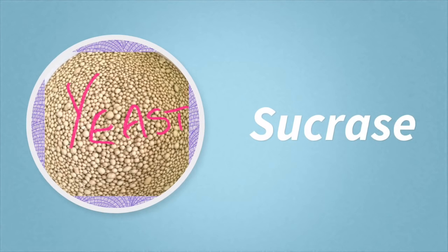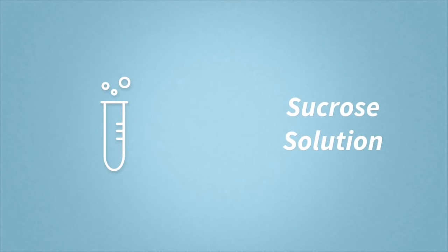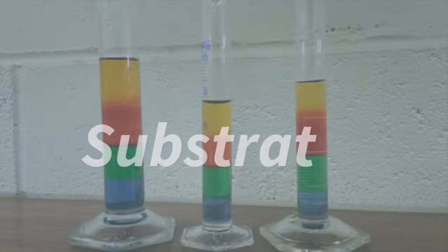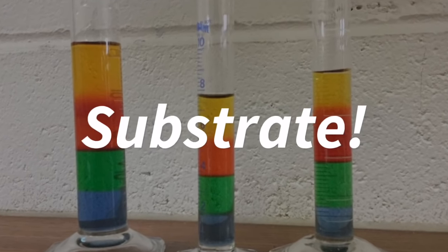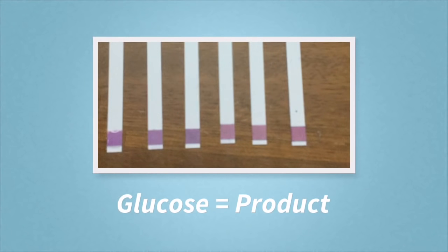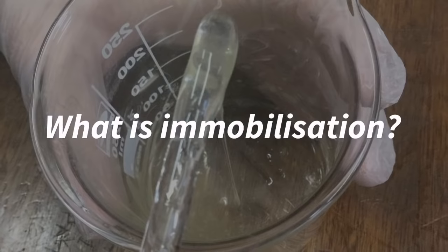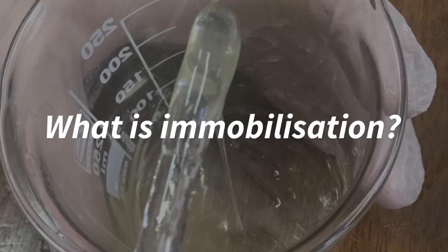In this practical, yeast was used and yeast cells contain the enzyme sucrase. Sucrose solution was also used. The sucrose acted as the substrate and the substrate was changed into glucose, which was our product. So what exactly does immobilization mean?